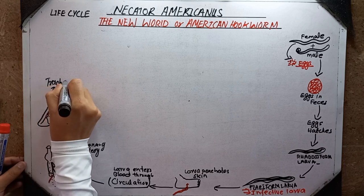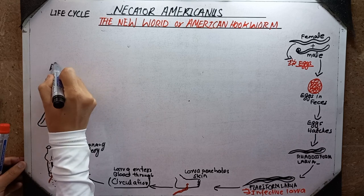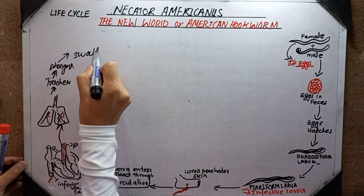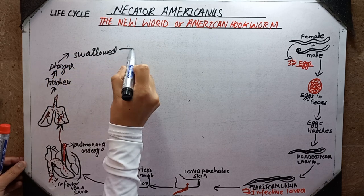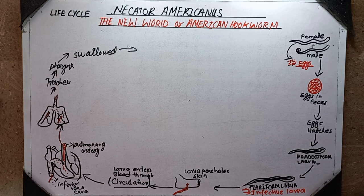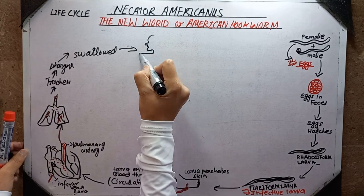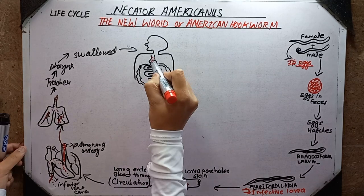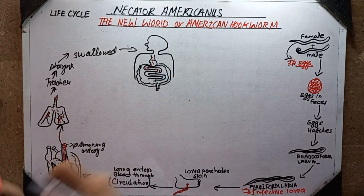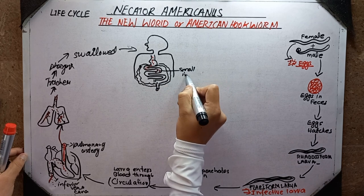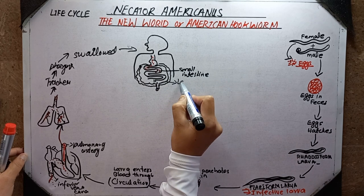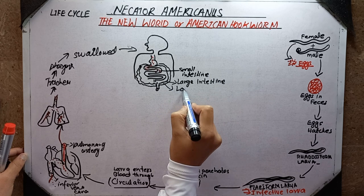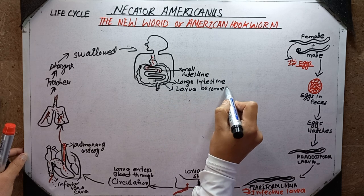The blood reaches the lungs, and the larvae present in the blood move up to the trachea, then from the trachea into the pharynx, and from the pharynx these larvae are swallowed again into the small intestine. They pass from the esophagus to the stomach and then reach the small intestine, before moving into the large intestine.